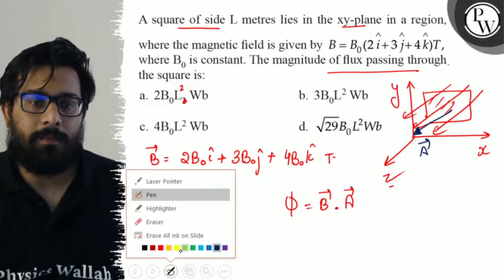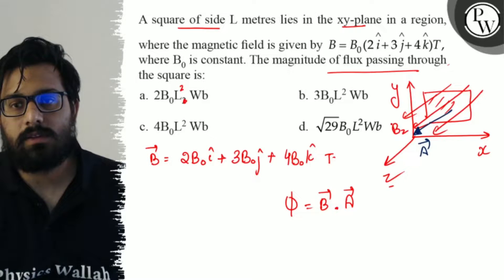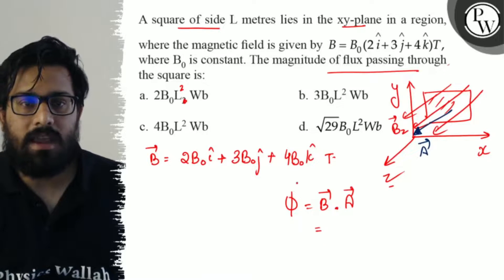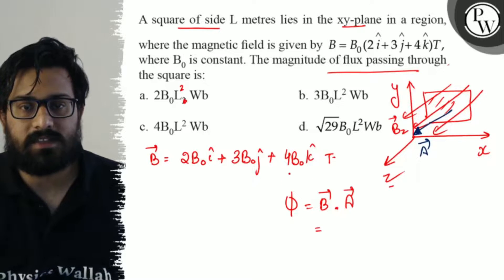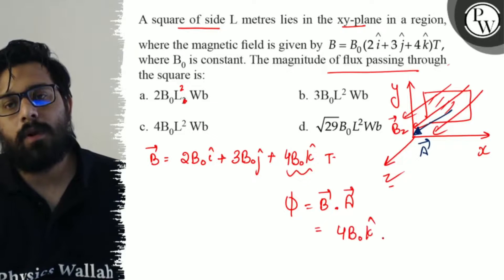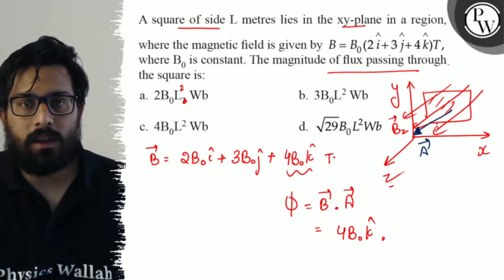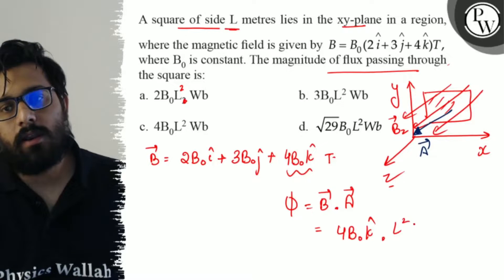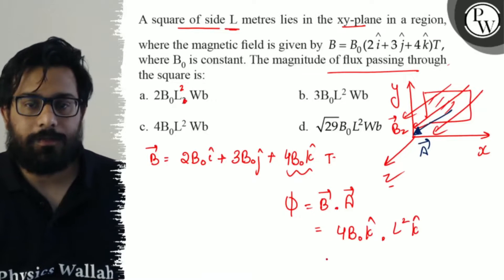The magnetic field B⃗ dot k̂ vector. The area is L², so we calculate 4B₀k̂ dot area L²k̂.